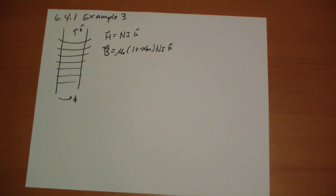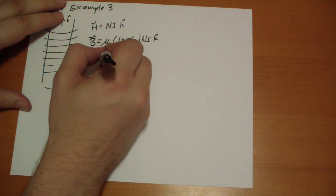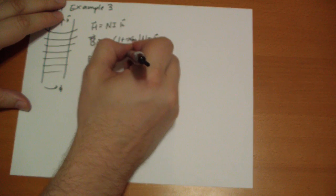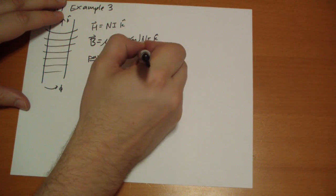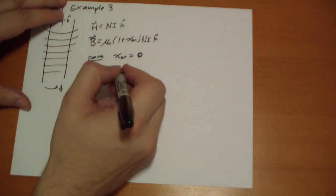So if the field is paramagnetic, then chi m is greater than zero. It's positive. And so the B field gets stronger.